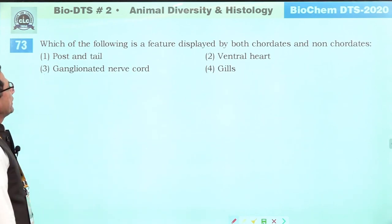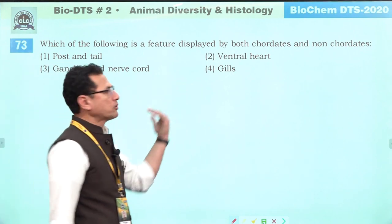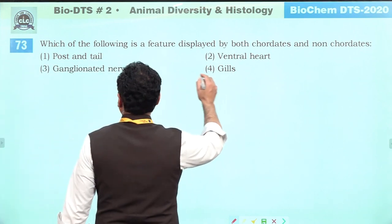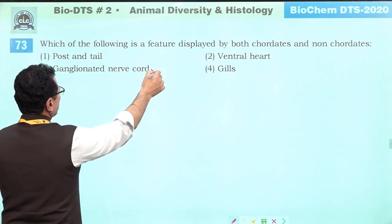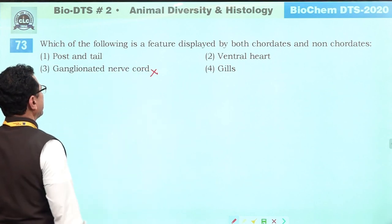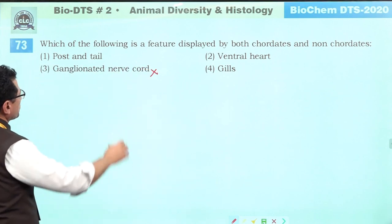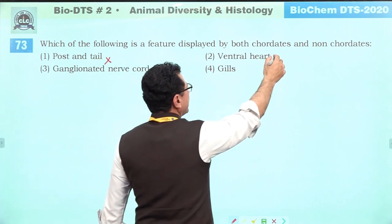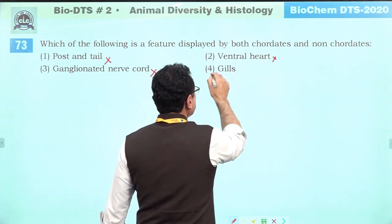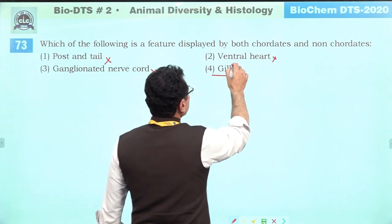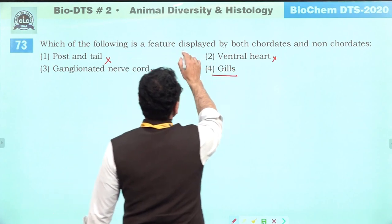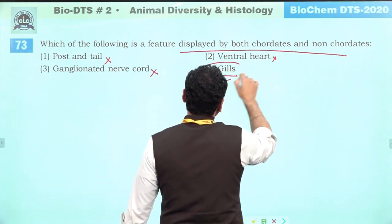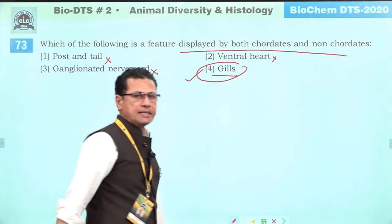Which feature is displayed by both chordates and non-chordates? Ganglionated nerve cord is not in chordates. Post-anal tail is a chordate feature. Ventral heart is a chordate feature. Gills are found in both chordates and non-chordates. Answer is one: gills.